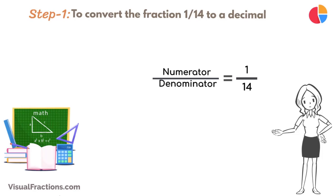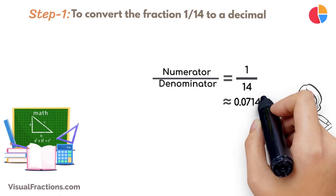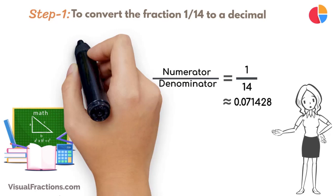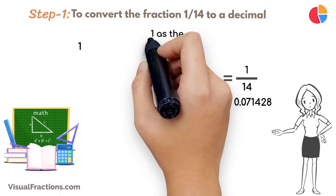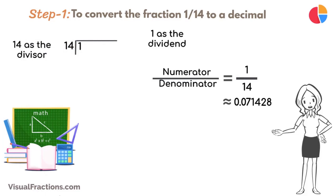Using a calculator, the answer we get is approximately 0.071428 repeating. But let's perform this division by hand using long division. Place 1 as the dividend and 14 as the divisor. Since 14 doesn't fit into 1, place a decimal point in our quotient and bring down a 0, making it 10.